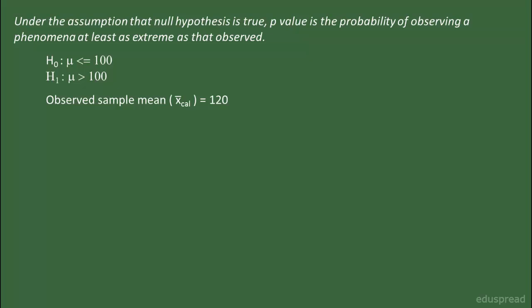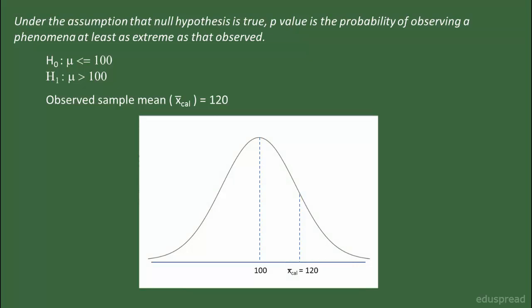Let's say we are given that the null hypothesis is μ ≤ 100 and the alternative hypothesis is μ > 100. And suppose the sample statistic, i.e. the observed sample mean, is equal to 120. This is not a full-fledged question, but this much information is sufficient to understand the concept of P-value. Let's also assume that the distribution of sample means is normally distributed.